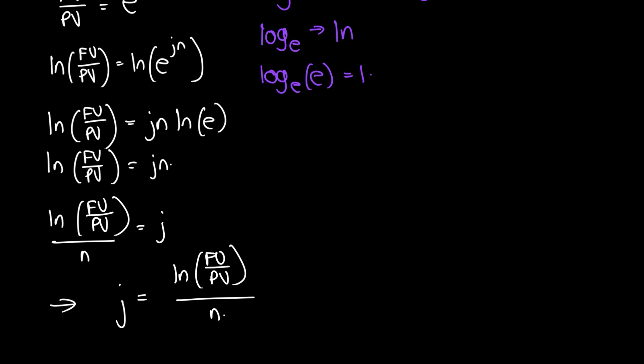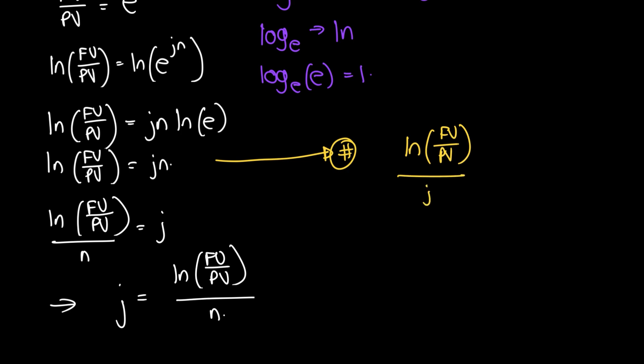If we want n to be the subject of the formula, we do the same process up until the same point, but instead of dividing through by n, we divide through by j. So n equals ln(FV/PV) divided by j, where n is in years. Whenever you have continuous compounding, your n units are years.